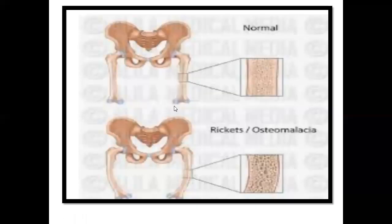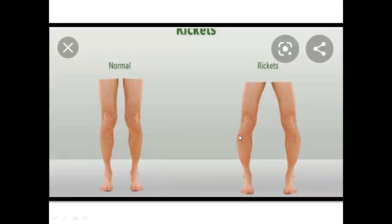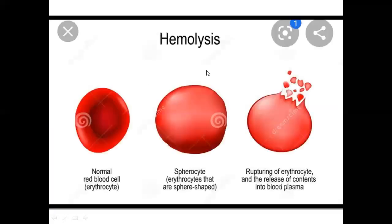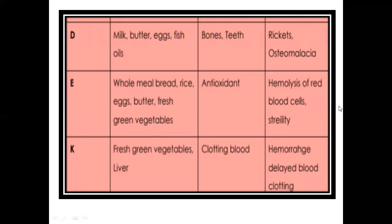Vitamin D is important for bones — you can see a normal straight bone compared to curved bones in the case of rickets and osteomalacia. In rickets, the legs show curved bones. Hemolysis refers to the rupturing of red blood cells and the release of their contents, which occurs due to deficiency of vitamin E. Vitamin E deficiency also causes sterilization.